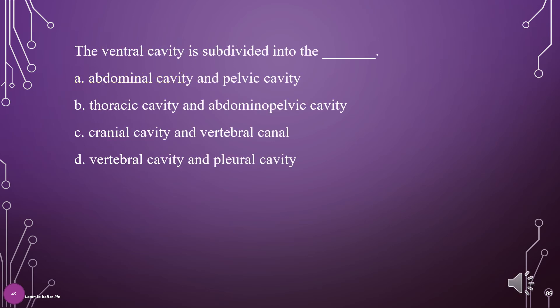The ventral cavity is subdivided into the what? A. Abdominal cavity and pelvic cavity, B. Thoracic cavity and abdominopelvic cavity, C. Cranial cavity and vertebral canal, D. Vertebral cavity and pleural cavity. The answer is B: Thoracic cavity and abdominopelvic cavity.